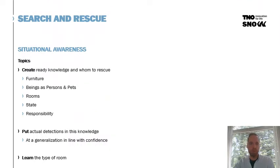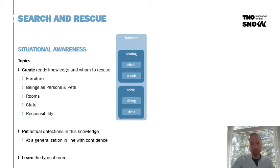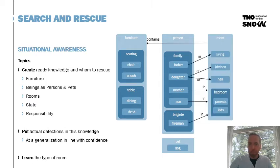The first topic addressed in SNOW is situational awareness. It starts by creating ready knowledge on whom to rescue. Since we are in a villa, we can expect furniture — seatings such as chairs and couches, and tables such as dining or desk. We also know we need to rescue beings, which are either persons corresponding to the family or to the fire brigade, and pets like the dog. The villa has rooms, and each room might contain particular furniture.